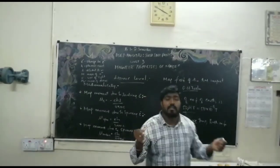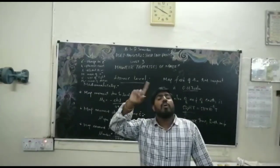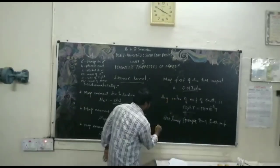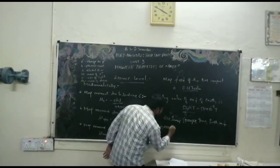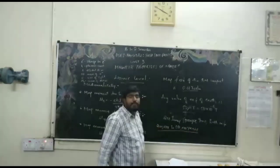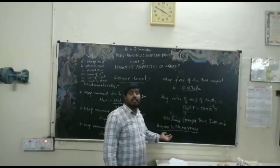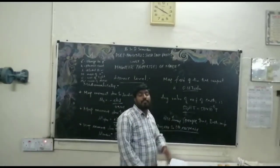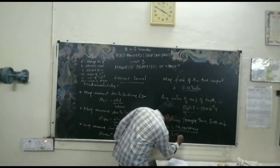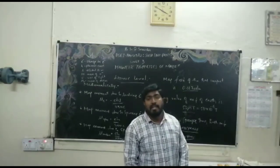The Earth's magnetic poles switch from north to south and south to north approximately every 200,000 to 300,000 years. The Earth is about 4.5 billion years old, so this switching has happened many times throughout its history.